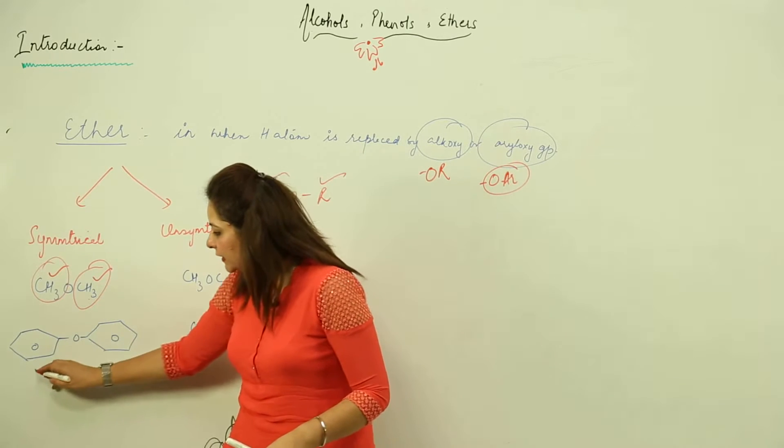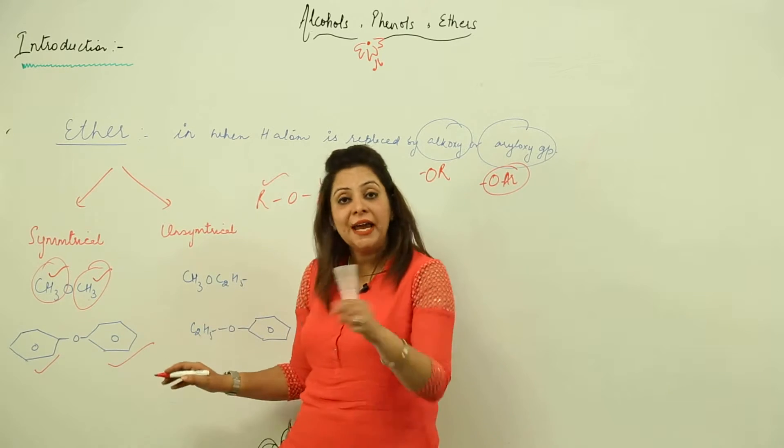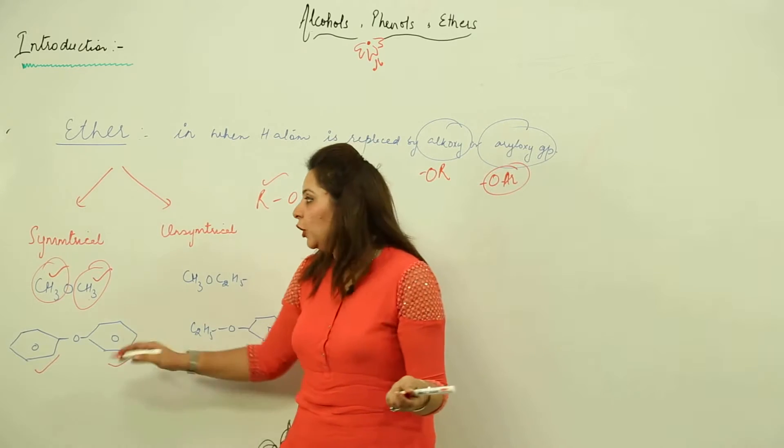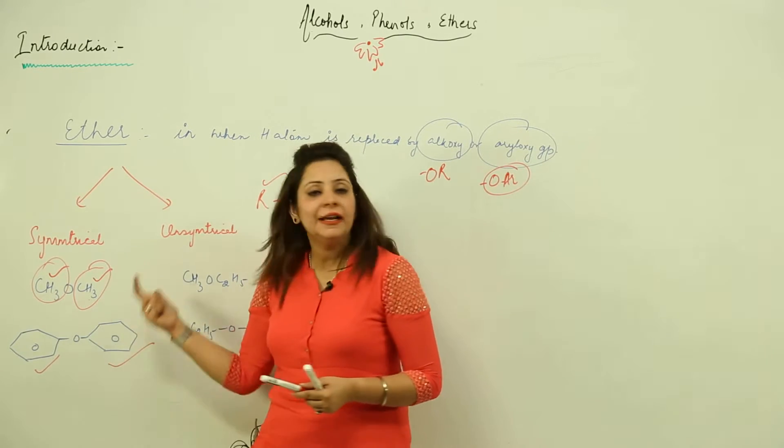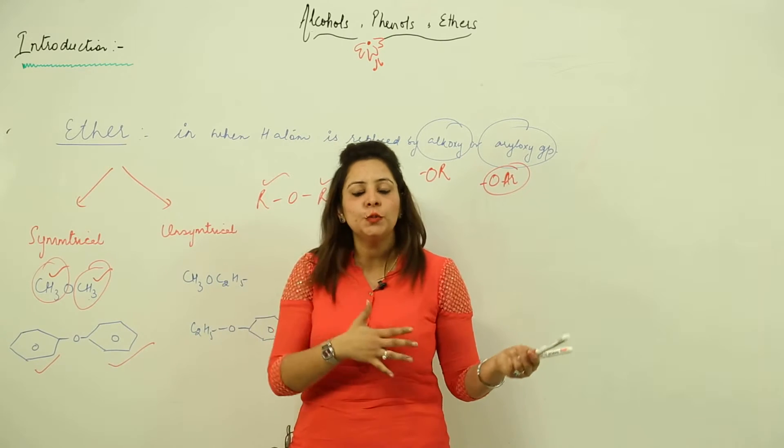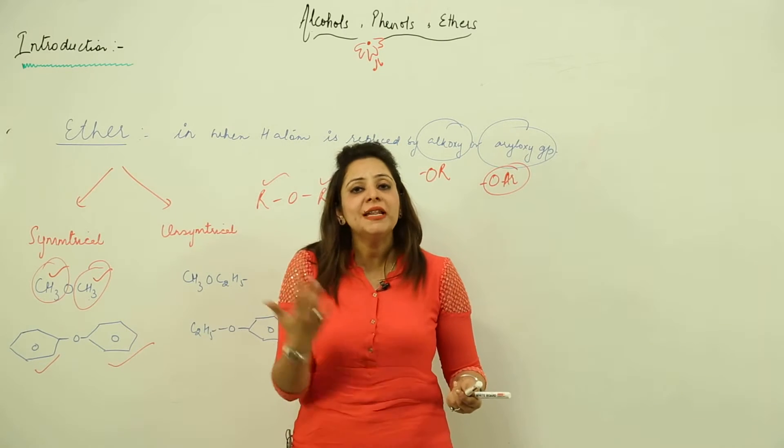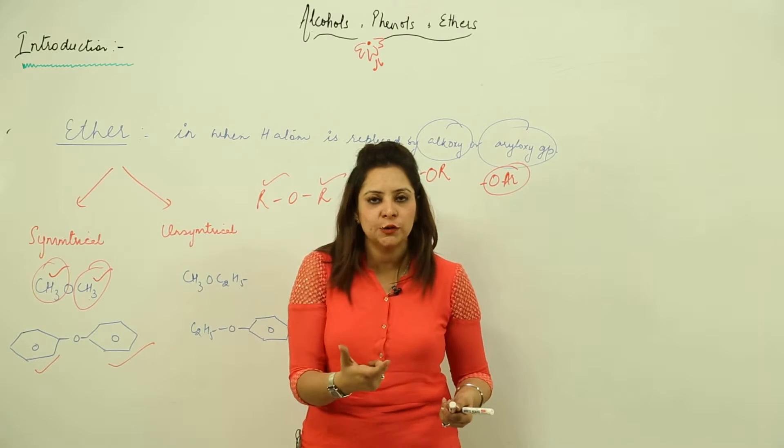Likewise, you can see that it is an aryl group, this is an aryl group. Again, the R and R are the same, so it belongs to the category of symmetrical ether. That means when the R and R, whether they are alkyl groups or whether they are two aryl groups, when they are similar to each other, they belong to the symmetrical ether category.